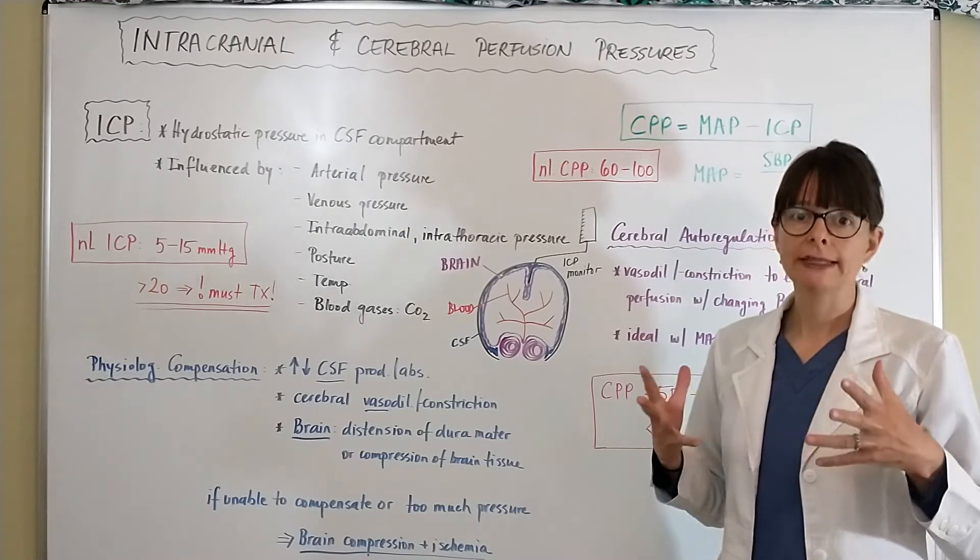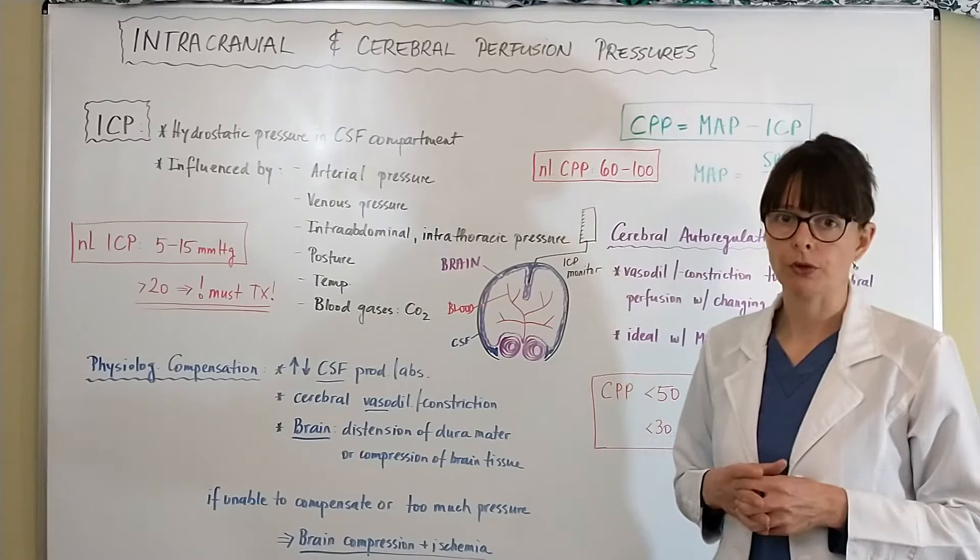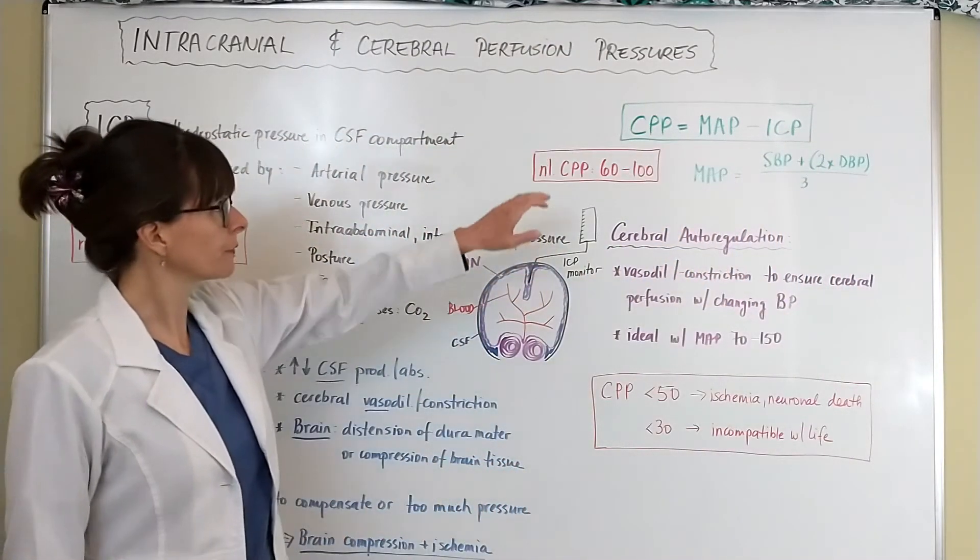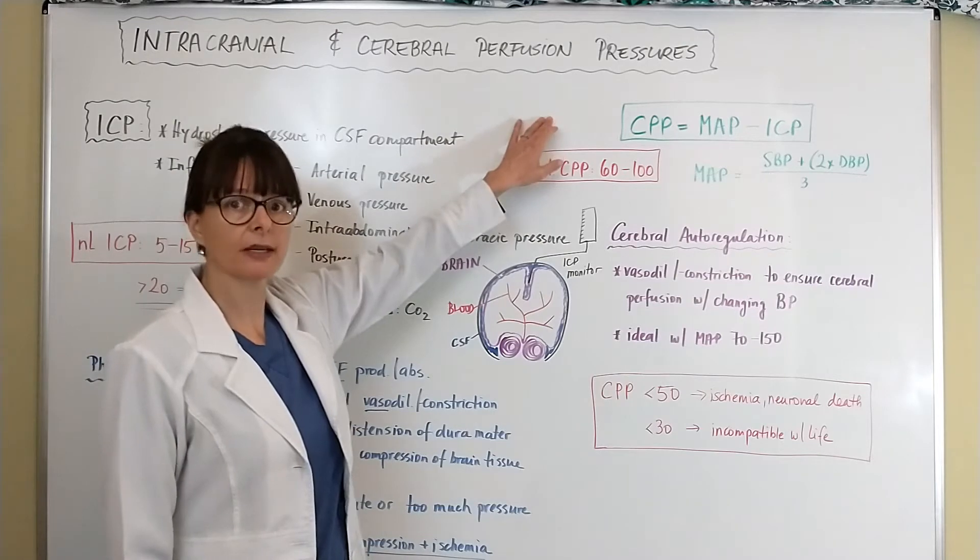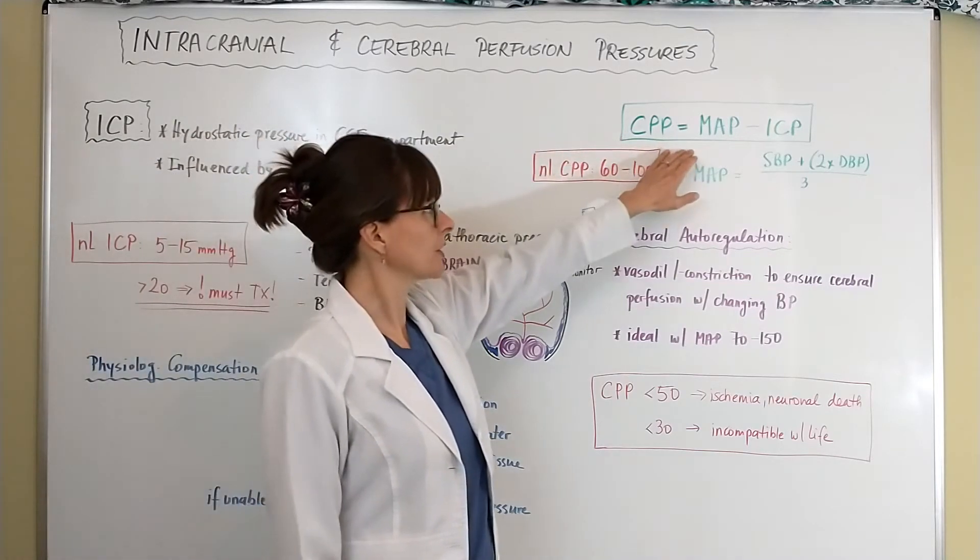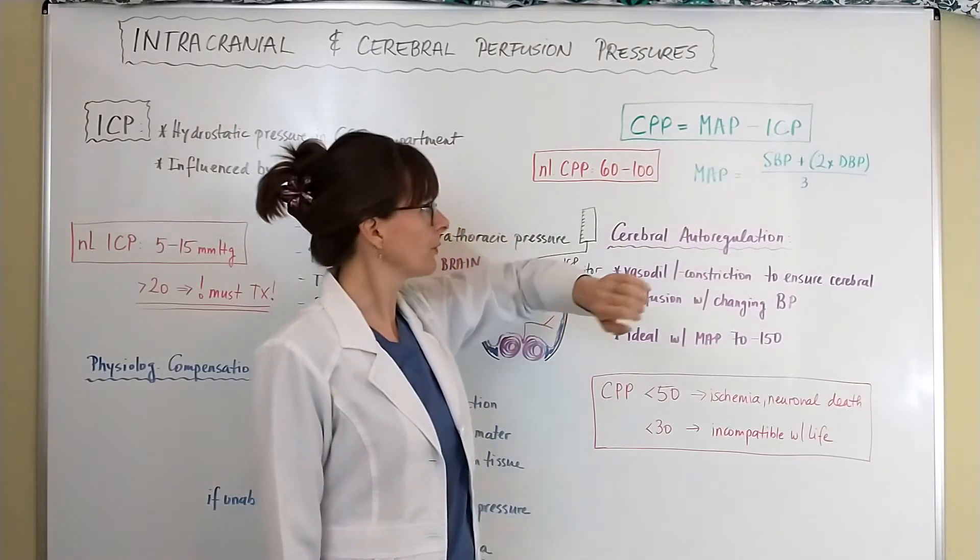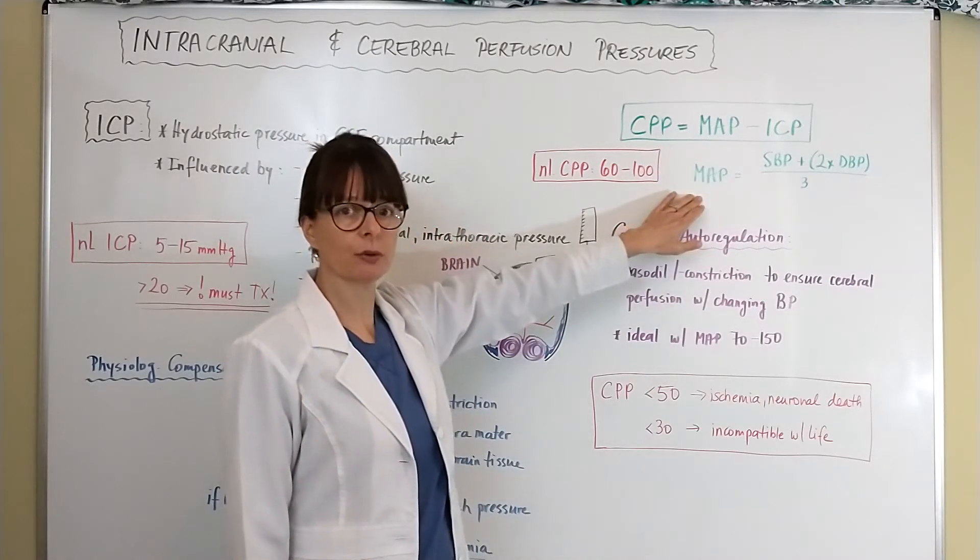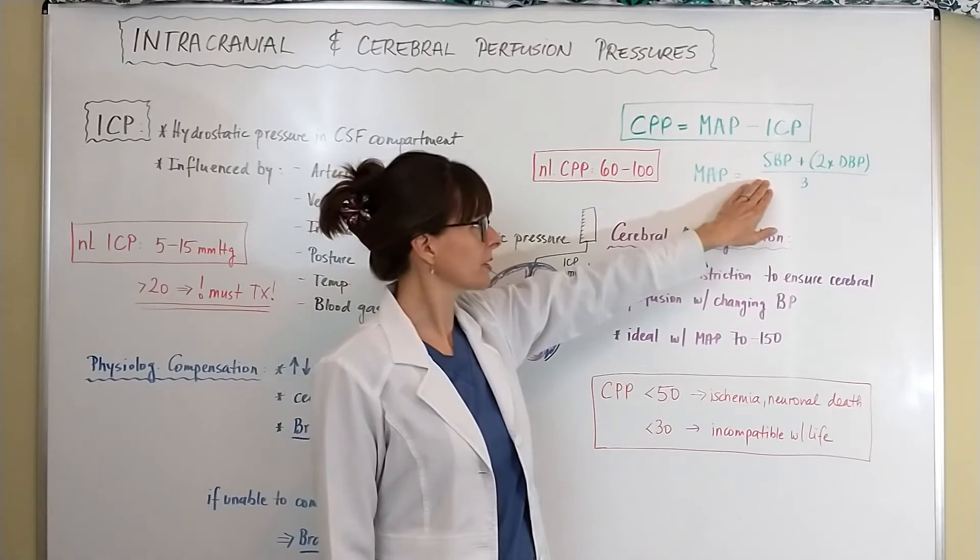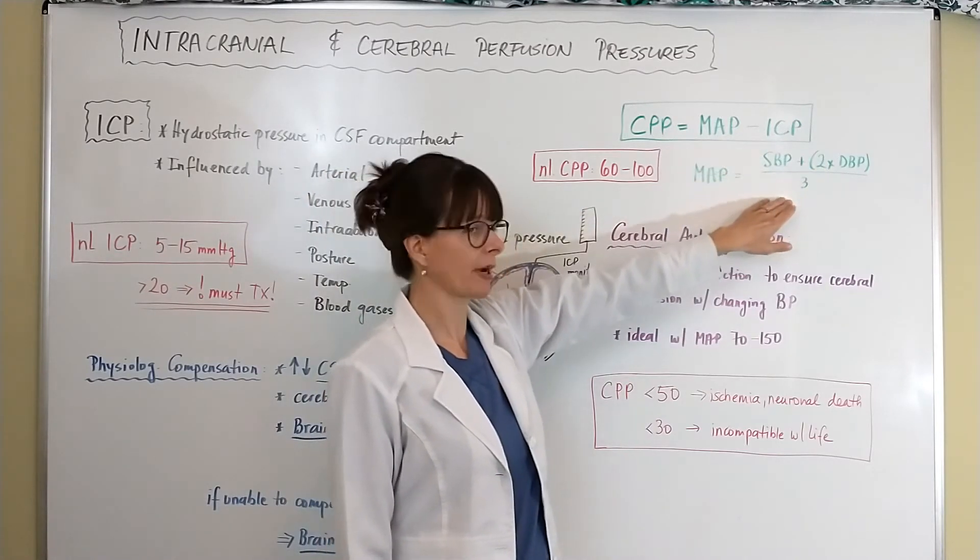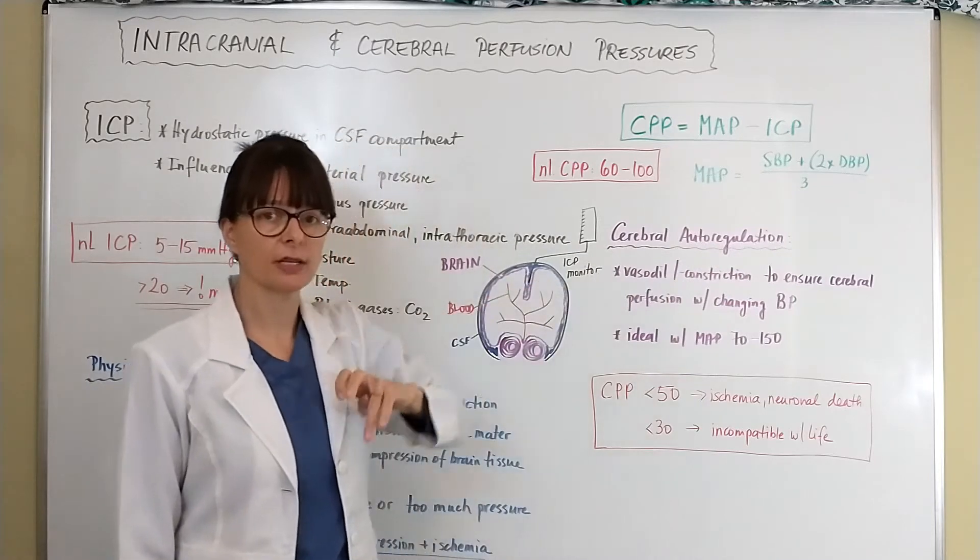Now over here, cerebral perfusion pressure is calculated by the mean arterial pressure minus the intracranial pressure. And recall that the MAP or mean arterial pressure is systolic blood pressure plus two times diastolic blood pressure divided by three. That can be very easily obtained with a very simple calculation.